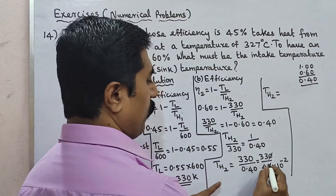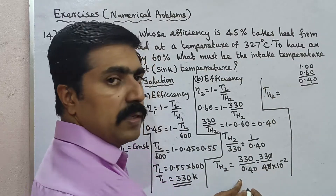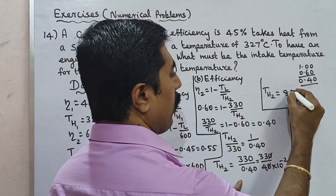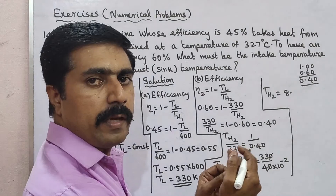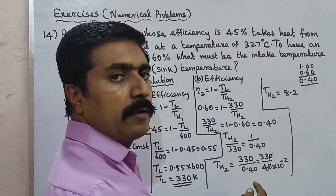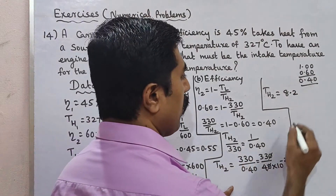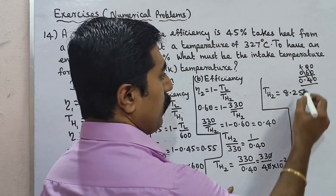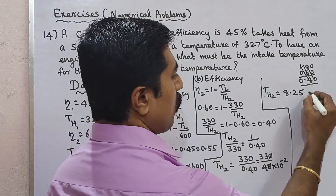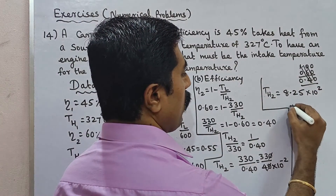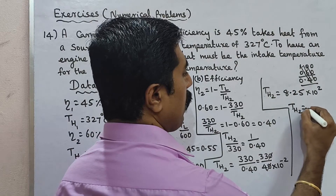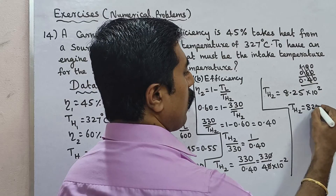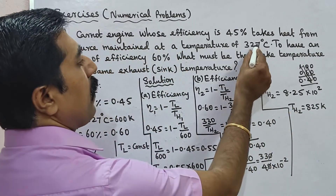TH2 equals 330 divided by 0.40, which gives TH2 equal to 825 Kelvin.